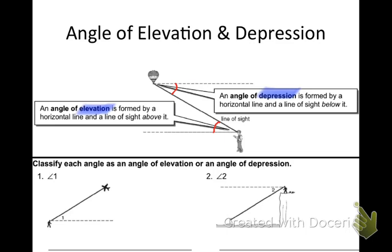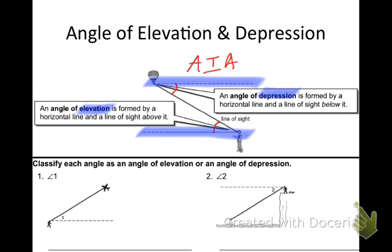Those red angles marked there — what type of angles are those? Remembering from chapter three: they're actually alternate interior angles. Those red angles would be alternate interior angles. So if these two lines are parallel, what does that make those two red angles? They are the same — they're congruent. And that's important to know today. So the angle of elevation and angle of depression, as long as those lines are parallel, they will be the same — they'd be congruent.